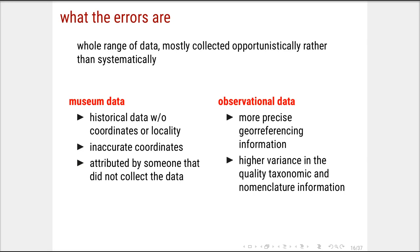When talking about inventories or community-level studies, we have higher variance in the quality of taxonomic and nomenclature information, even with experts, because many rare species are hard to identify. What museum and observational data have in common is that we usually have nothing about absences. For ecological niche models, the input requires both presence and absence data. Most of the time we do not have real absences, so we use statistical tools to generate pseudo-absences. When we do have absence information it is very useful, but usually we only know where species are, not where they aren't.